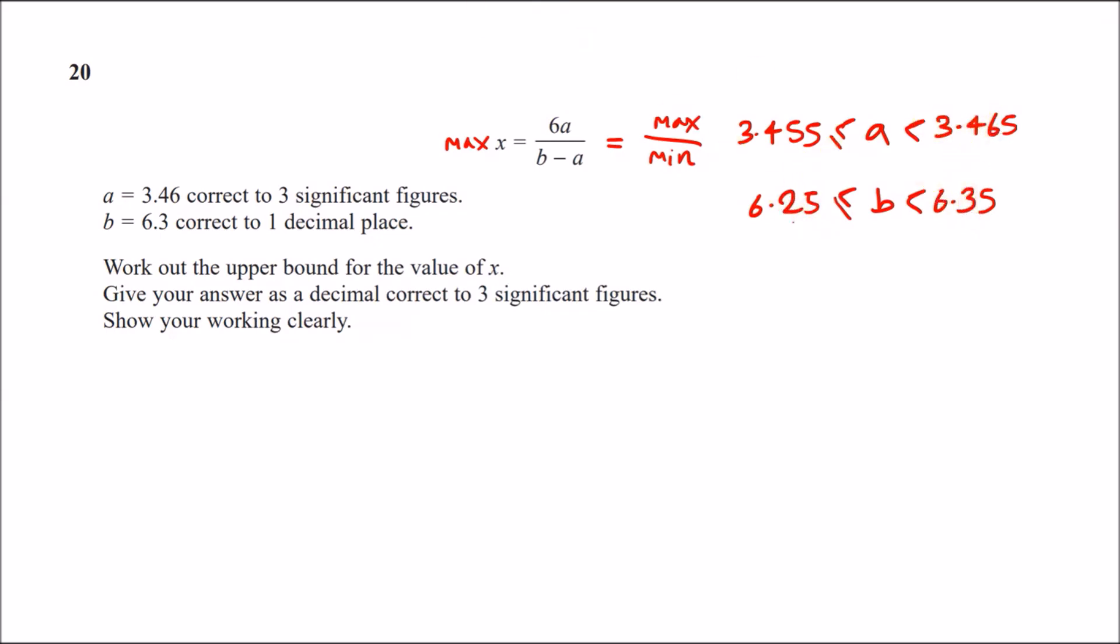Now looking at what we need, we just need to maximize a. So we need to pick this value here. And we need to minimize the bottom, b minus a. So to minimize b minus a, we need to have the smallest difference. So therefore, we can say, the upper bound of x equals 6 times the upper bound of a over the lower bound of b minus the upper bound of a. Plug this in the calculator and you should get an answer of 7.46, to three significant figures. And that's it guys.